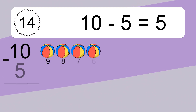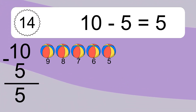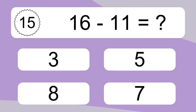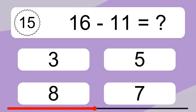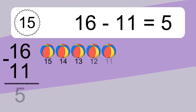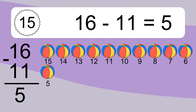10 minus 5 equals what? 10 minus 5 equals 5. Let's count it: 9, 8, 7, 6, 5. 16 minus 11 equals what? 10 minus 5 equals 5. Let's count it: 15, 14, 13, 12, 11.